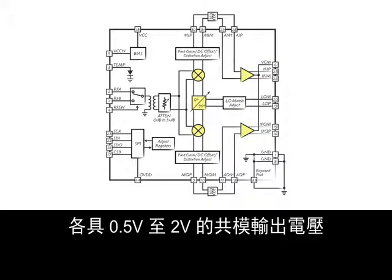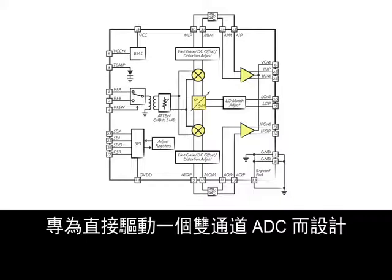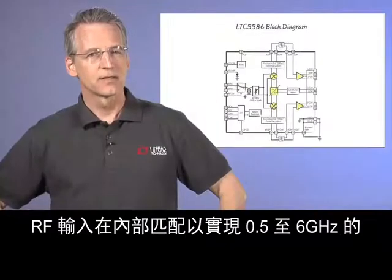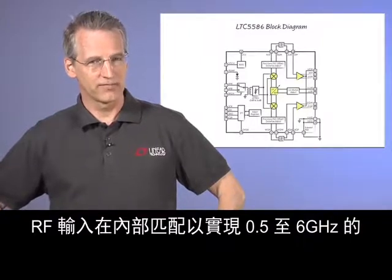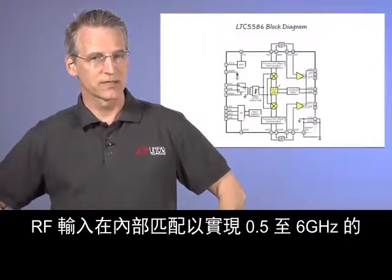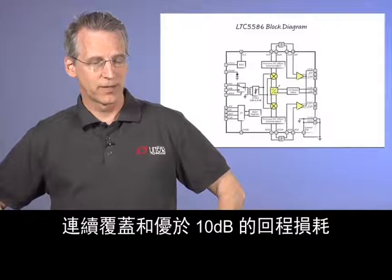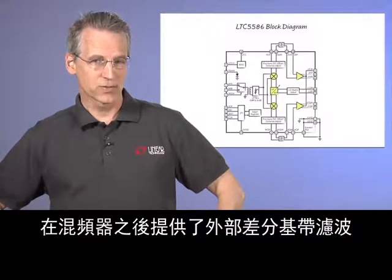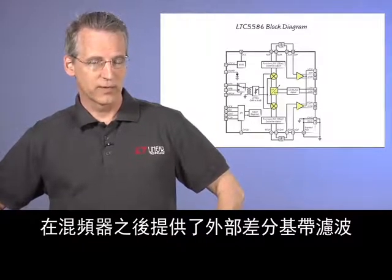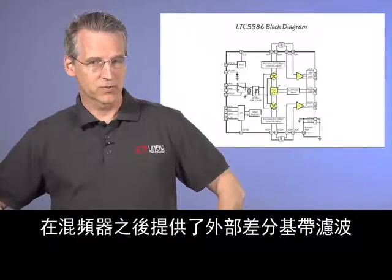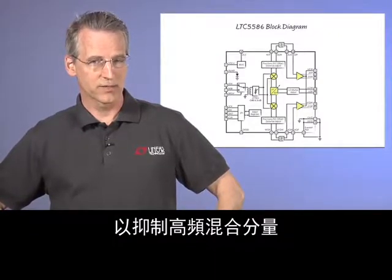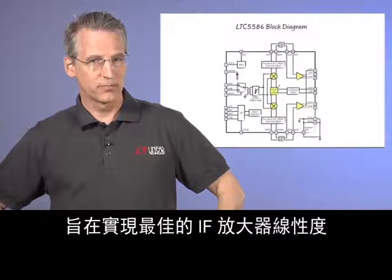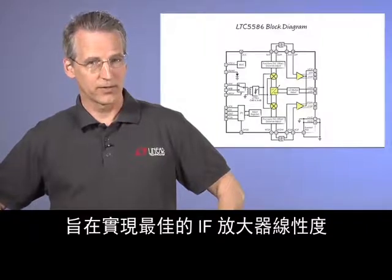Each amplifier has 0.5 to 2 volt common mode output voltage designed to directly drive a dual ADC. The RF inputs are internally matched for 0.5 to 6 GHz continuous coverage with better than 10 dB return loss. There is provision for external differential baseband filtering after the mixers to suppress high-frequency mixing products in order to achieve best IF amplifier linearity.